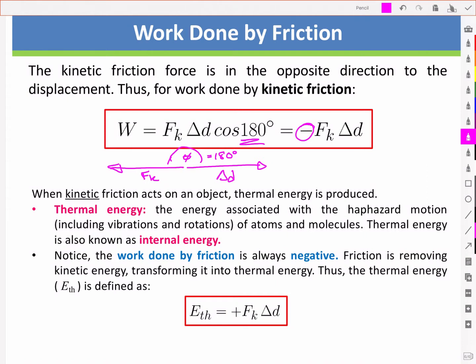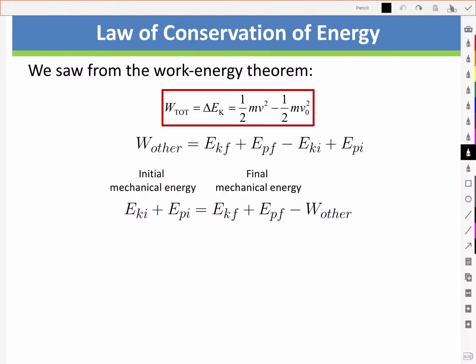The law of conservation of energy however tells us that energy is never lost. So where does the energy go that is taken away? Well it's converted into thermal energy or heat, like when you rub your hands together. Let's put that into context in the formula we had previously for the conservation of energy.